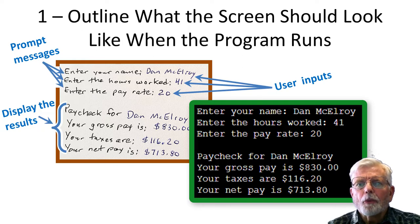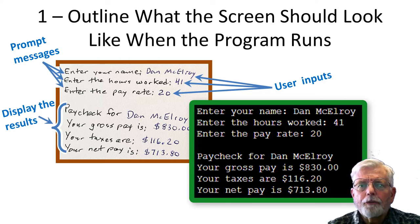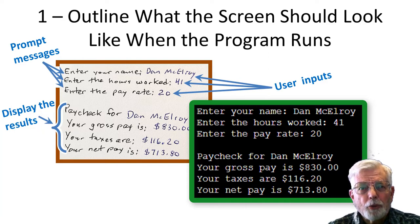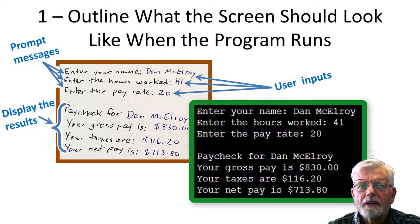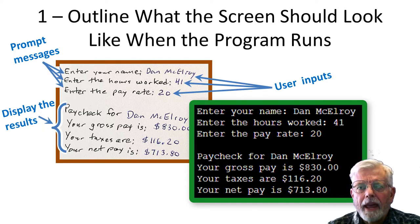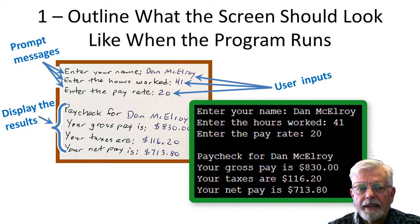Here is a sample of running the program with 41 hours at $20 per hour. Since there are 41 hours, 40 hours are paid at regular pay of $20 per hour and there is one hour of overtime paid at $30 per hour, because overtime is paid at time and a half. That makes the gross pay equal to $830. Taxes are computed at $116.20, which gives a net pay of $713.80.